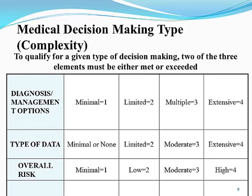Looking at this chart, it's a snapshot of the three areas: diagnosis management options, type of data, and overall risk, along with the associated complexity. CMS provides guidance on how you determine medical decision-making — to qualify for a given type, two of the three elements must be either met or exceeded.